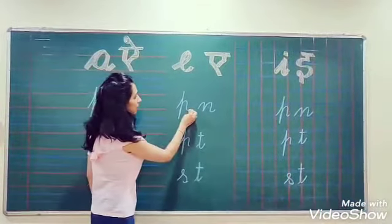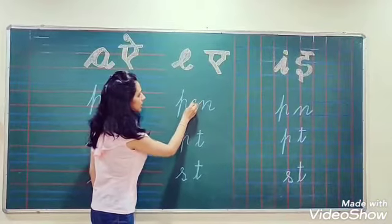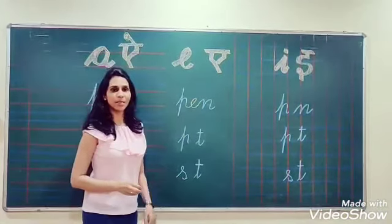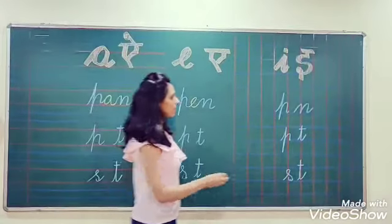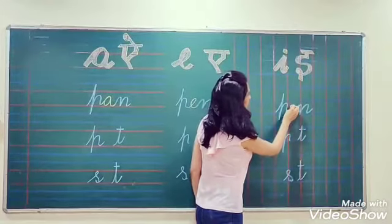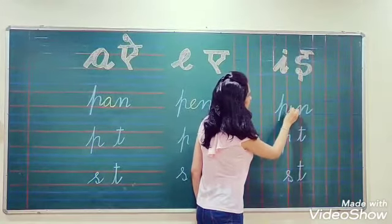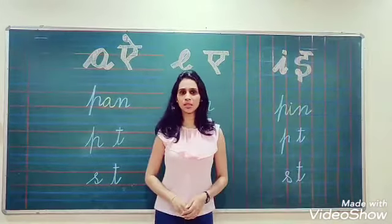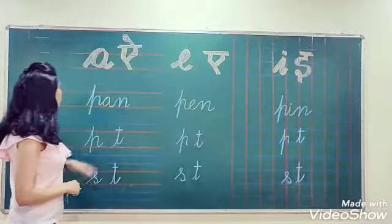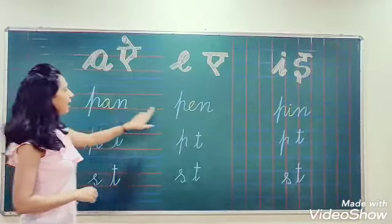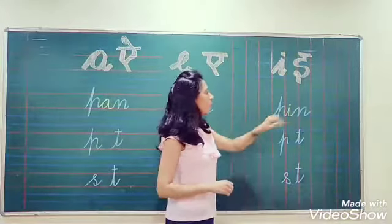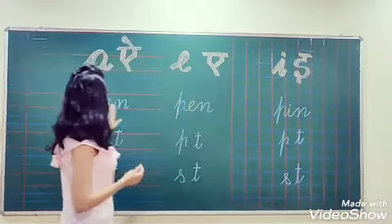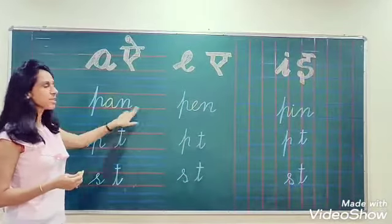When I insert E in that, it will become 'Pen'. So by this way, you can see A, E, and I — only these things are different. P and N, they are the same.